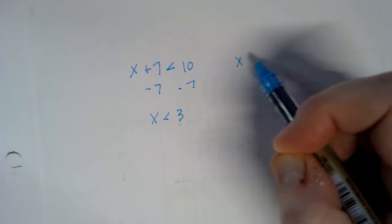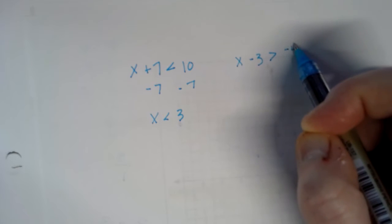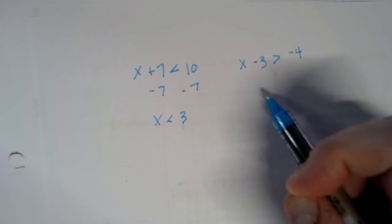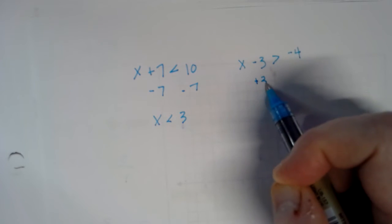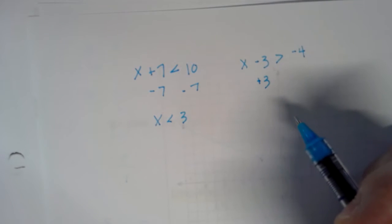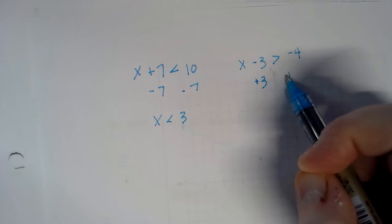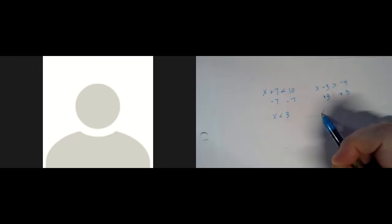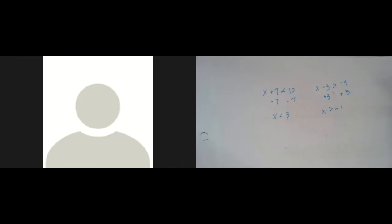Another one: x minus three is greater than negative four. Same exact thing — we need to isolate that x. So we're going to get rid of the three by adding three, because it's negative originally, we want to zero it out. And then we're going to do the exact same thing on this side.